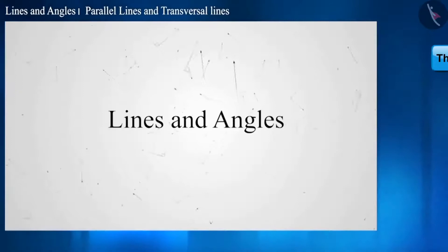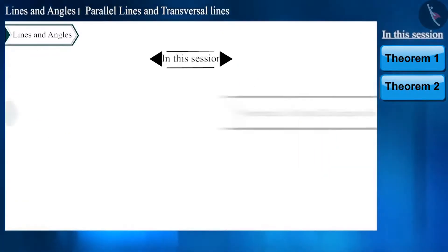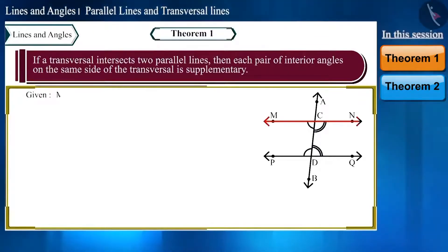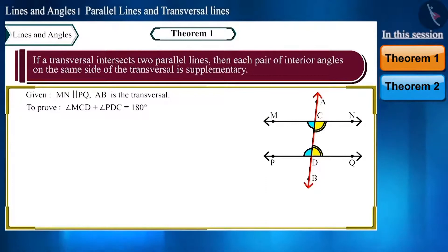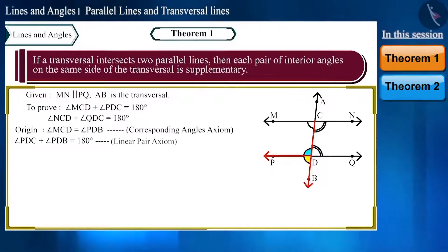Hello friends, welcome to this video. In the previous video we discussed properties of parallel lines and transversal. Today we will see some theorems. Theorem: if a transversal intersects two parallel lines, each pair of interior angles on the same side of the transversal is supplementary. We are given that line MN and line PQ are parallel, and we have to prove that angle MCD plus angle PDC equals 180 degrees.